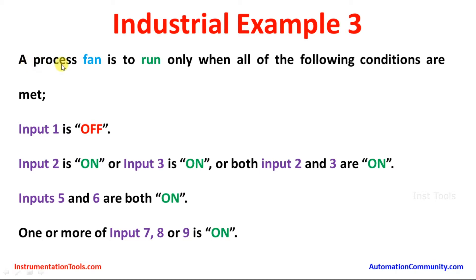A fan is to run only and only when all of the following conditions are met: Input first is off. Input second is on, or input third is on, or both input second and third are on. Input five and six are both on. One or more of input seven, eight, or nine is on. When all these conditions are met, only and only then is the fan going to run.